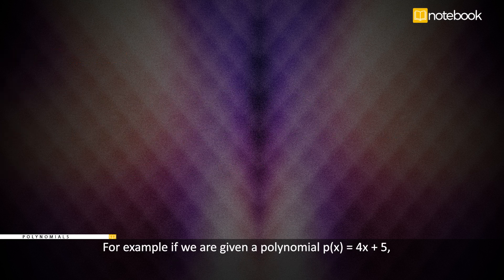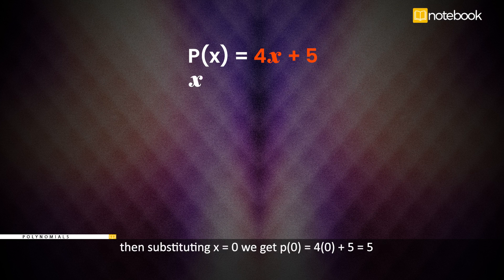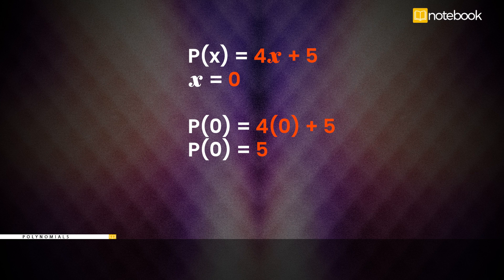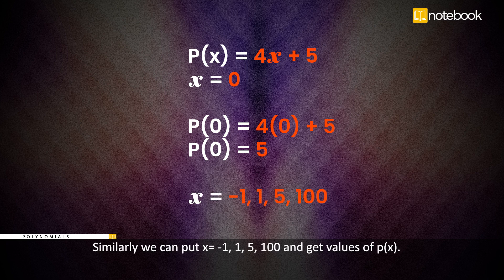For example, if we are given a polynomial p(x) = 4x + 5, then substituting x = 0 we get p(0) = 4 × 0 + 5, which is equal to 5. That is the value of the polynomial p(x) = 4x + 5 at x = 0. Similarly, we can put x = −1, 1, 500, and get different values of p(x).